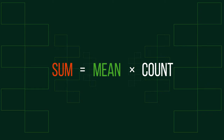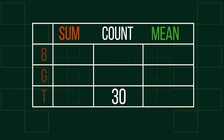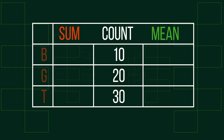Consider this scenario. 30 students sit a maths test: 10 boys, 20 girls. The girls' marks total 320. The boys' marks total 130. Calculate the mean for boys and girls and the class. Pause if you want to give it a go.